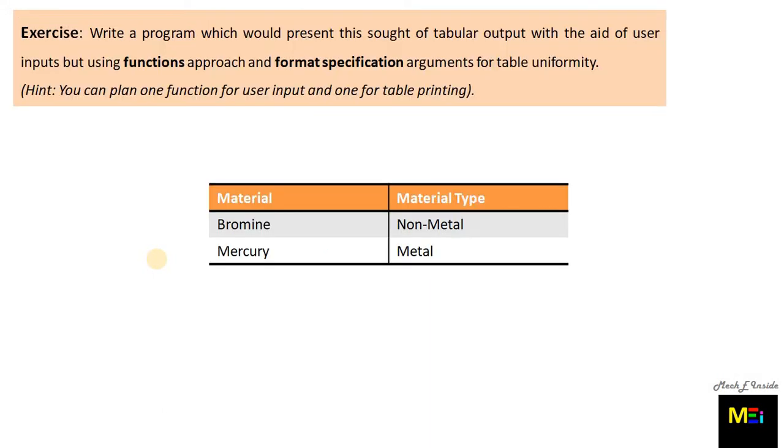The exercise is: write a program which would present this sort of tabular output with the aid of user inputs using functions approach and format specification arguments for table uniformity. The hint is: you can plan one function for user input and one for table printing. While performing this exercise, please make the variable declaration in global declaration section. Pause the video and give a try to solve this exercise.